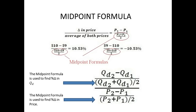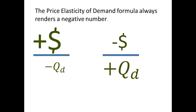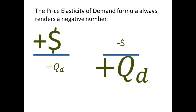Except in the case of Veblen or Giffen Goods, the Price Elasticity of Demand will always be negative. This is consistent with the law of demand: if the price of something increases, then the quantity demanded will decrease; if the price decreases, then the quantity demanded will increase. Either the numerator or the denominator in the PED equation will be negative, but never both, so the PED will always render a negative number.